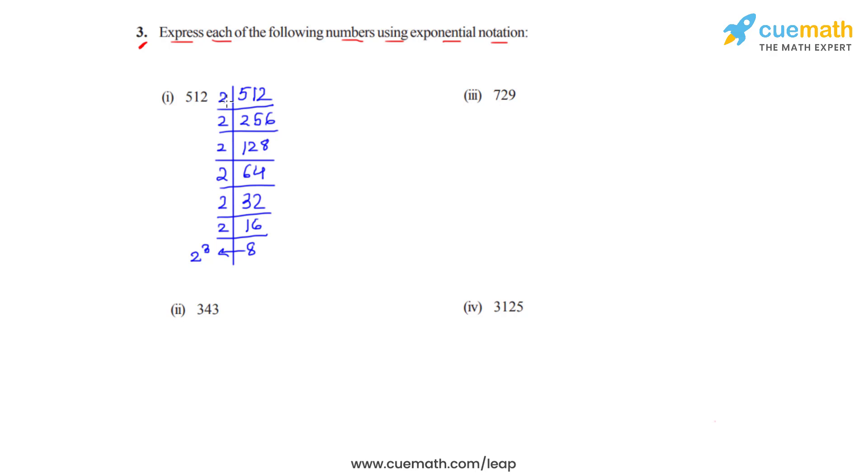So if we count, 2 is appearing 9 times. So 512 can be written as 2 raised to 3 times 2 raised to 6 and then that will be 2 raised to 9. So this is how we express or write 512 in exponential notation.